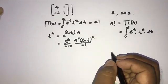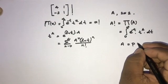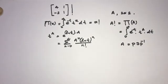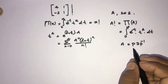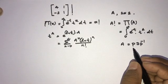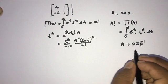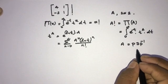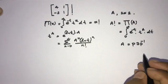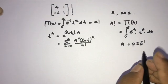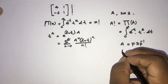Now, A is a diagonalizable matrix, so we know A equals P·D·P⁻¹. We talked about this theory in a previous video about the logarithm of a matrix. I will add the link in the description. So A^n equals P·D^n·P⁻¹.